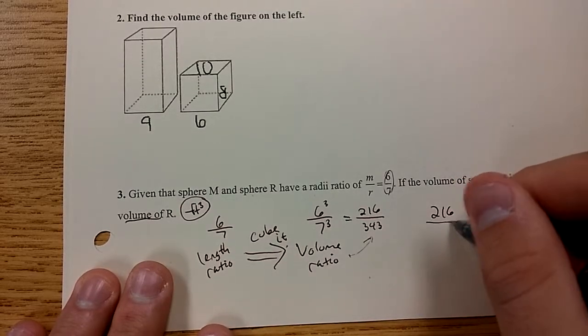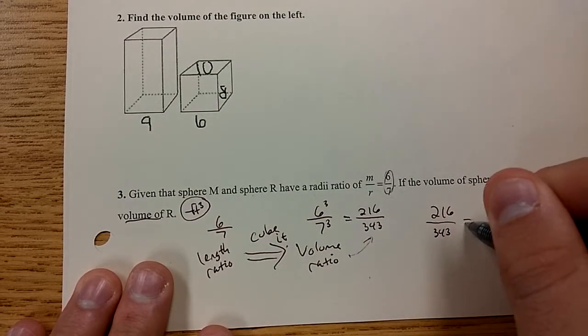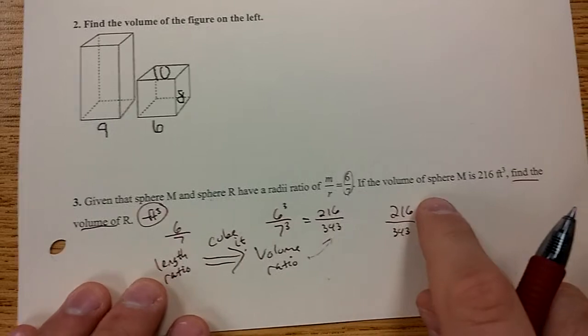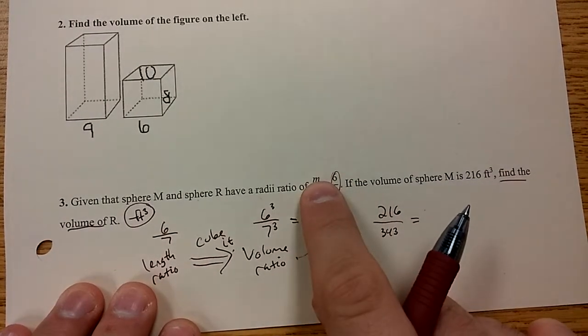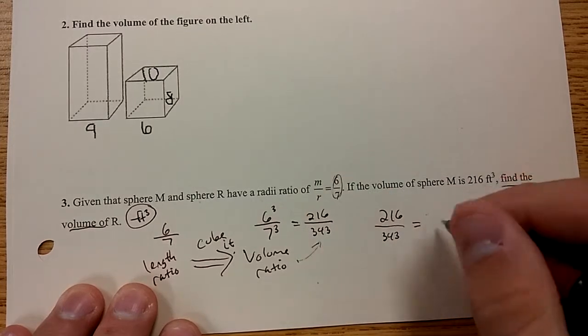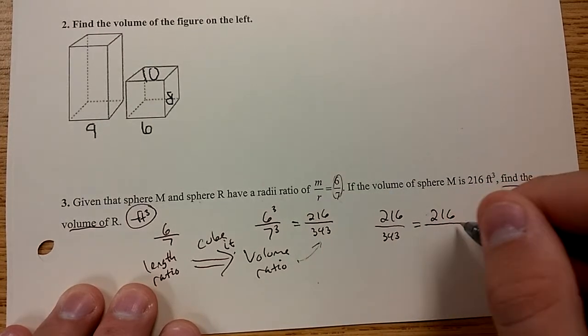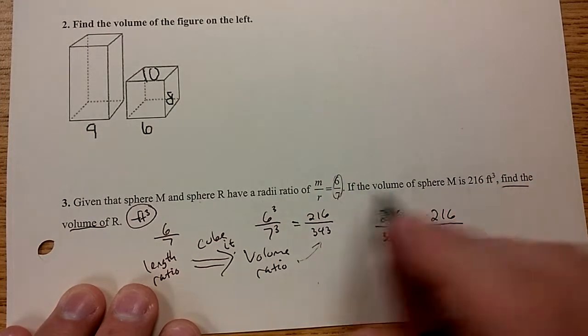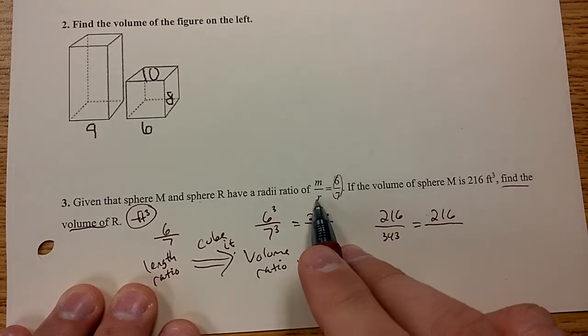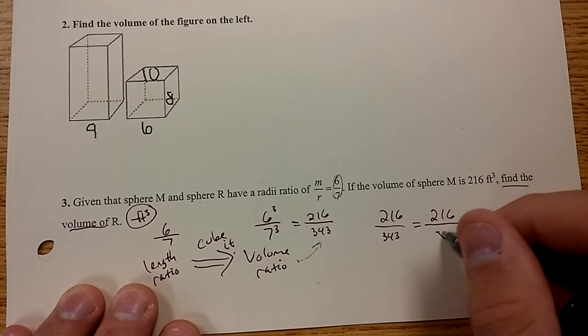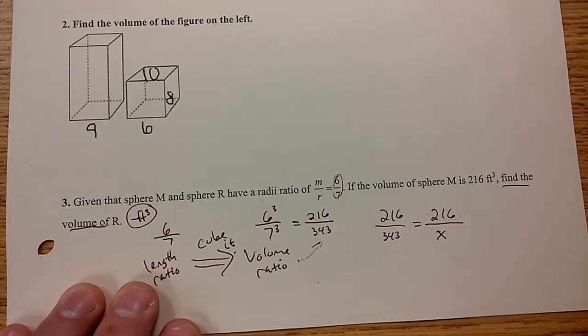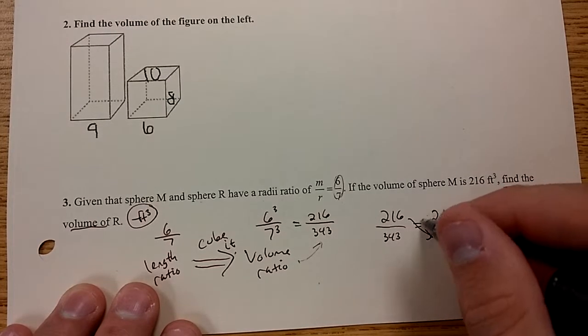So you're going to use this to find the missing volume. They tell you sphere M has a volume of 216. M was initially on top, so therefore 216 cubic feet goes on top as well. Find the volume of R. R originally on the bottom, so keep R on the bottom here. We'll call it X. Cross multiply and solve.